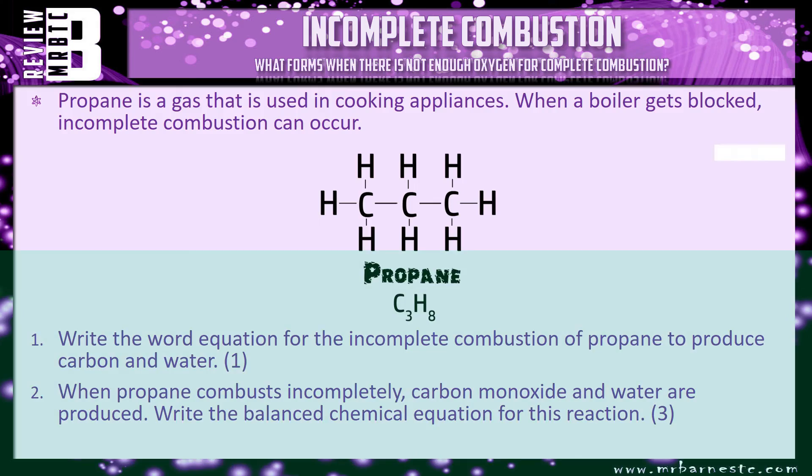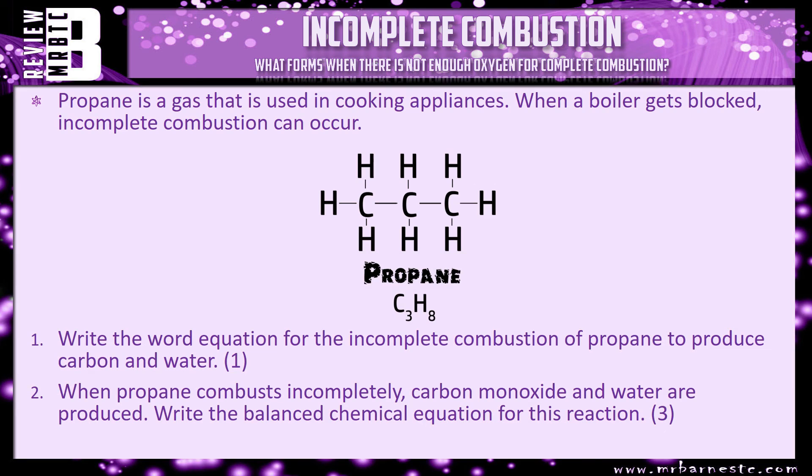And that's all there is to it. That may have seemed a little complicated, but even if you can't do the balancing you'll still get the first three marks in a question like that — writing the word equation and putting in the symbols for oxygen, carbon, carbon monoxide, and carbon dioxide, as long as you can remember them.